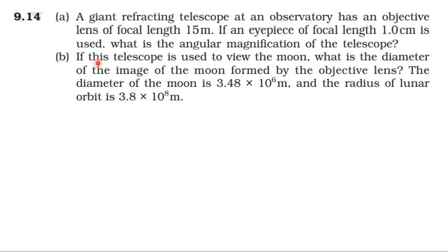From NCRT textbook, from the topic Ray Optics and Optical Instruments, topic 9.14. First one: a giant refracting telescope at an observatory has an objective lens of focal length 15 meters. If an eyepiece of focal length 1 centimeter is used, what is the angular magnification of the telescope?